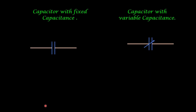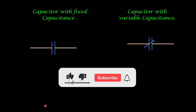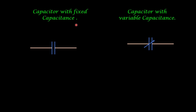Before we wind up this video, a capacitor with fixed capacitance is represented in a circuit by two parallel lines, as shown in the diagram. The symbol for a capacitor with variable capacitance is two parallel lines with a cross arrow.